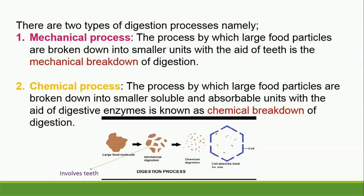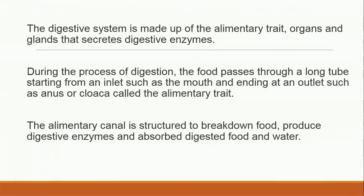Study the image: here is a large food molecule which is broken down by the teeth — that is mechanical digestion — and further broken down by enzymes — that is chemical digestion. After this, the molecules can enter the cell for the cell to make use of them. The digestive system is made up of the alimentary tracts, organs and glands that can secrete digestive enzymes. During the process of digestion, the food passes through a long tube starting with an inlet such as the mouth and ending at an outlet such as the anus or cloaca. The alimentary canal is structured to break down food, produce digestive enzymes, and absorb digested food and water.